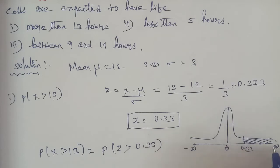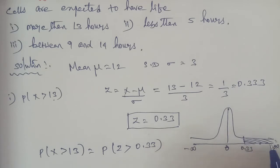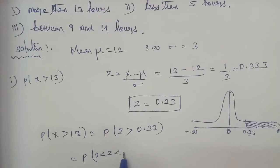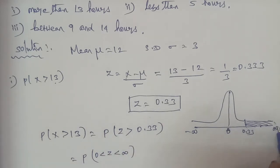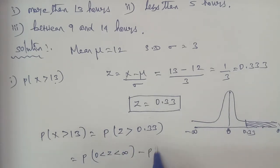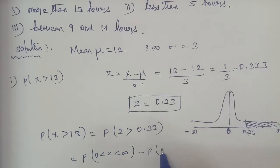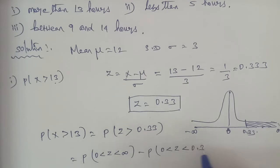So P(X > 13) = P(0 < Z < ∞) − P(0 < Z < 0.33), which equals 0.5 minus the table value for Z = 0.33.